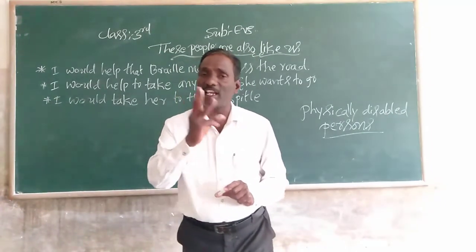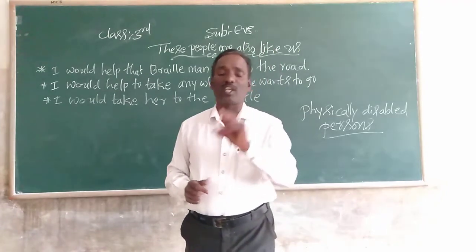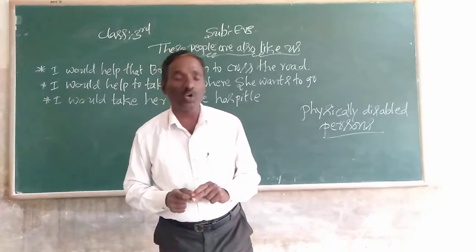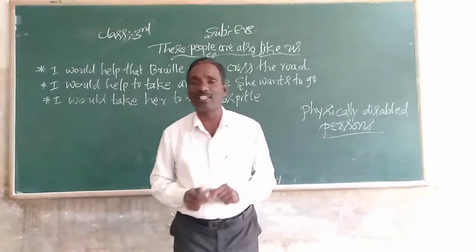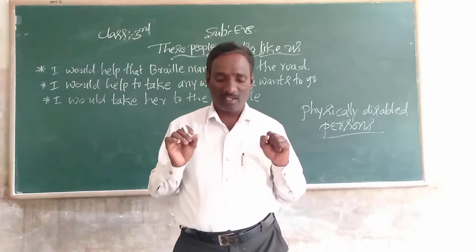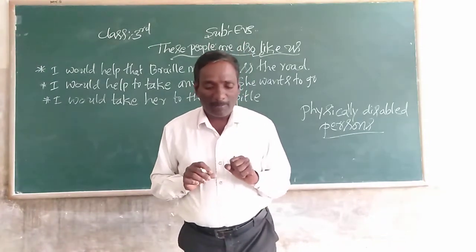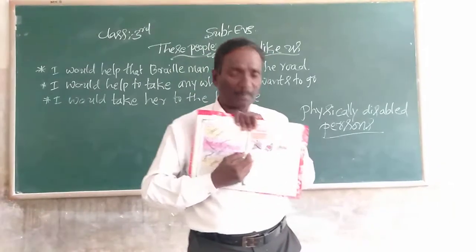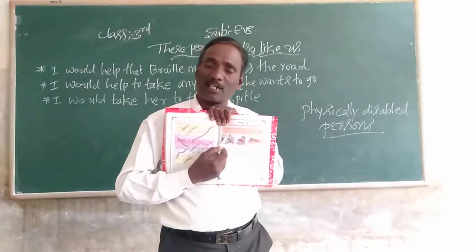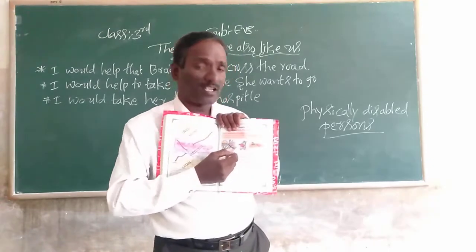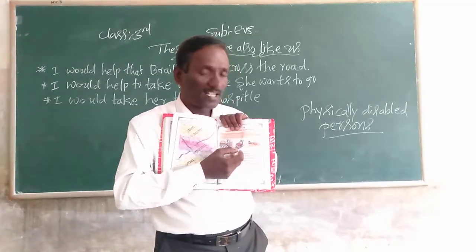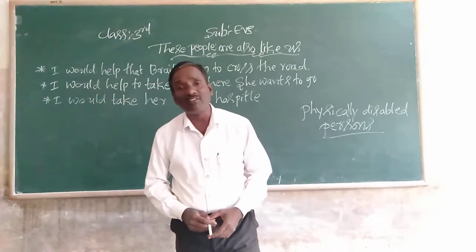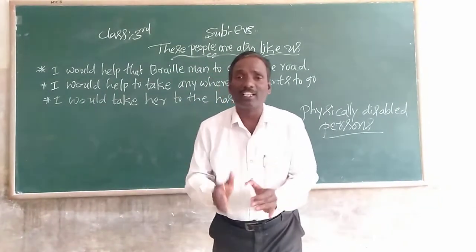In your textbook, there are 3 pictures. Observe them. Three situations have been shown: one is a blind person, one is a physically disabled person, and one is a weak girl. If you were in this situation, what would you have done? What would you do to help?